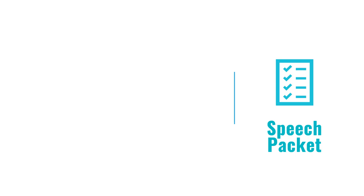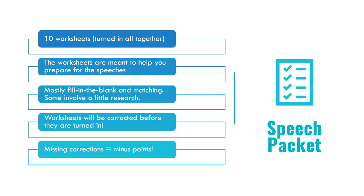Like last year, you will have to do a speech packet — one per semester. They consist of 10 worksheets and are turned in all at once, once a semester. The worksheets are meant to help you prepare for your speeches and are mostly fill-in-the-blank and matching. Some worksheets involve a little research, so you will need to use the internet. Worksheets will be corrected before they are turned in — either in class or via corrections posted in online classes. If you do not correct your worksheets, that equals minus points. You should not be getting minus points for corrections because all the right answers will be given to you.